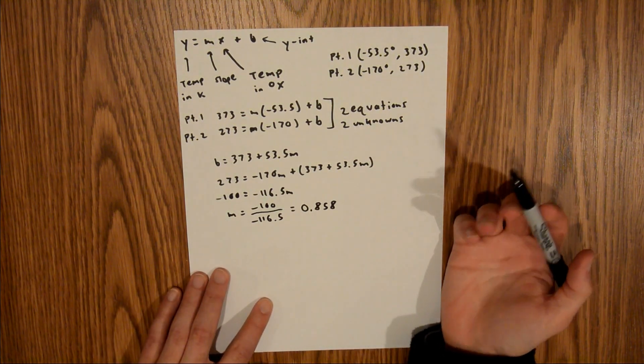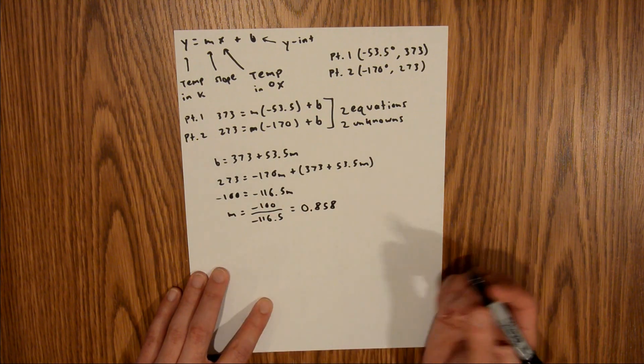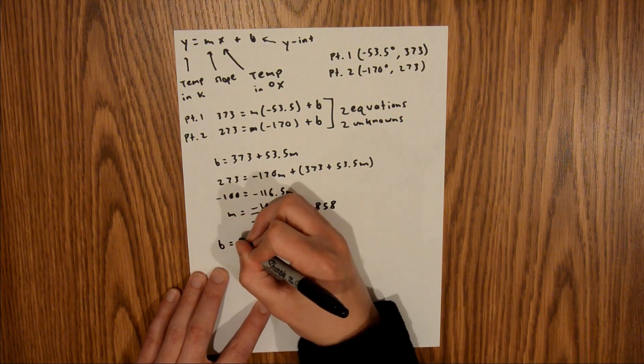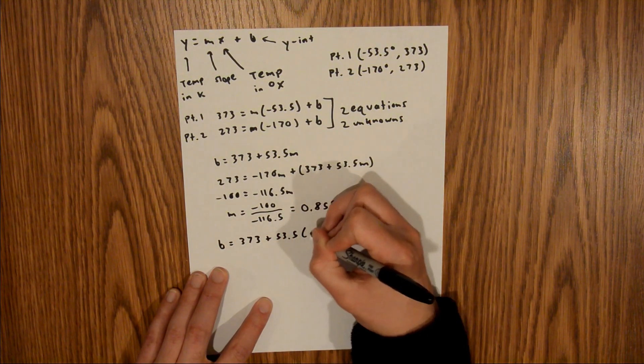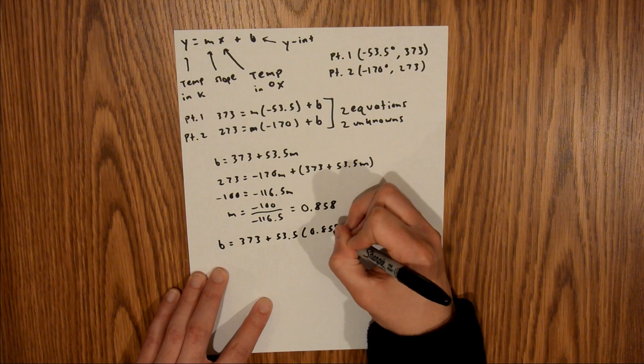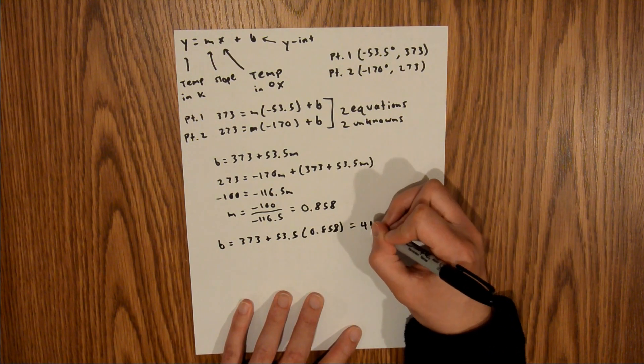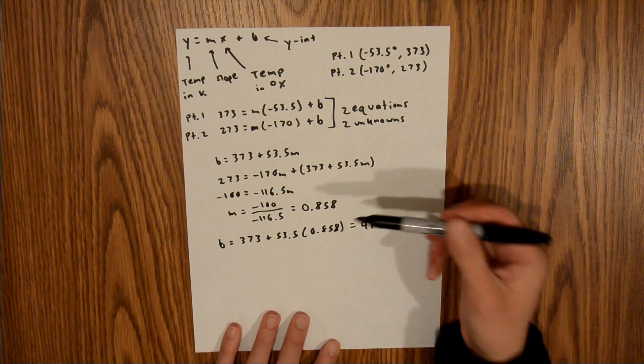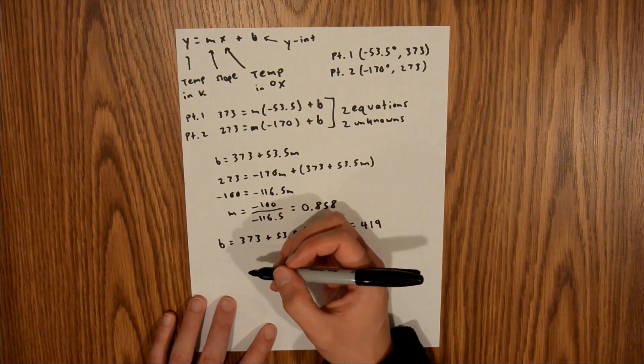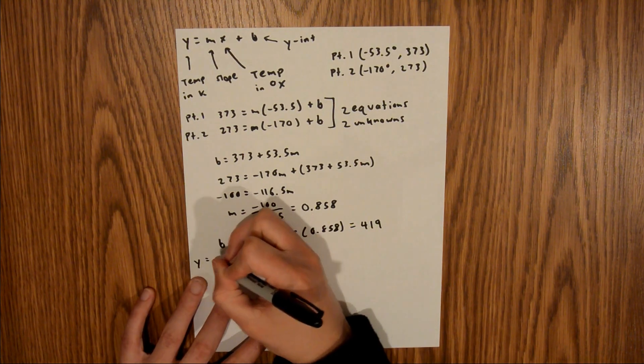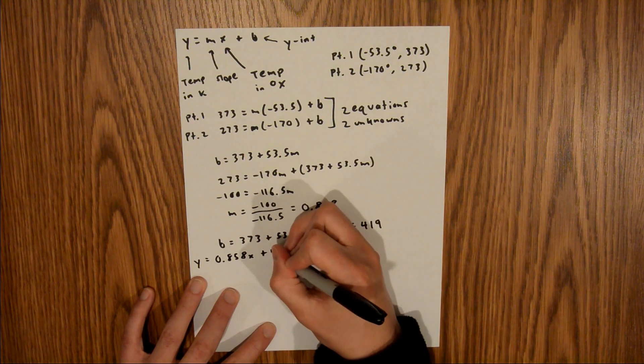So, now that's my value of m, and what I can do is plug that value of m into this equation right here to solve for b. And if you plug that into your calculator, this should equal about 419. And so, now I have the m and the b that go into my generic equation. So, I'm going to plug those back in there. That's going to give me y is equal to 0.858x plus 419.